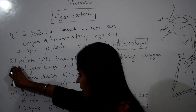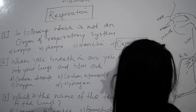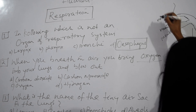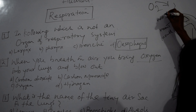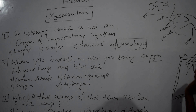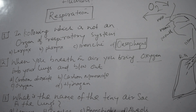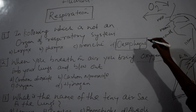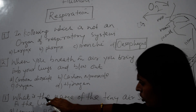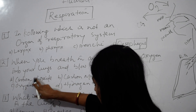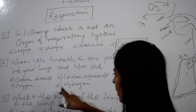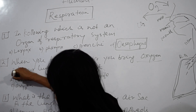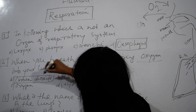We take in oxygen, but what do we leave out? We leave out carbon dioxide, which is the waste gas from our body. Question 2 options were carbon dioxide, carbon monoxide, oxygen, and hydrogen. The answer is carbon dioxide.